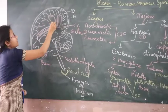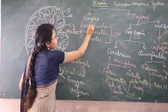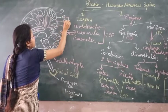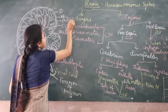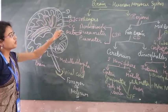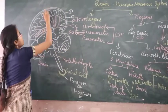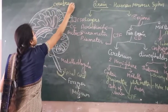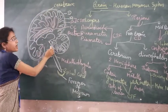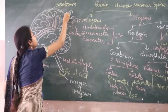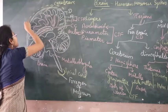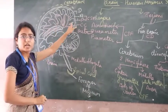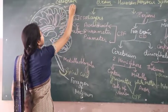Between the two layers — arachnoid and piamater — the cerebrospinal fluid flows. The forebrain is made up of two parts: cerebrum, which is the largest part of the brain, and the brain is a soft organ protected inside the skull. The part of the skull in which the brain is protected is known as the cranium.